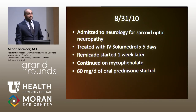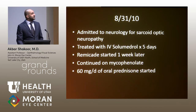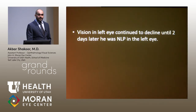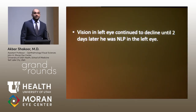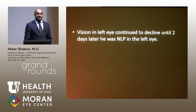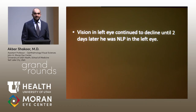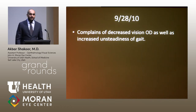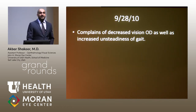He was treated with IV Solu-Medrol for five days, started on Remicade a week later, continued on Cellcept, and transitioned to oral prednisone at 60 milligrams. His vision continued to decline until two days later he was no light perception in the left eye. Then he disappeared for a month.